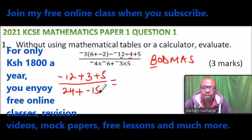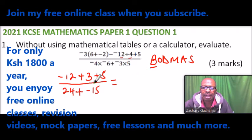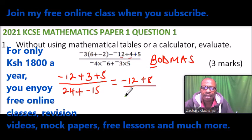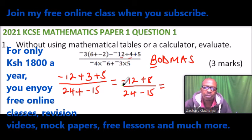Now we do the addition. In the numerator: plus 3 plus 5 is 8, so we have minus 12 plus 8, which gives minus 4. The denominator is 24 minus 15, which gives 9. So the final answer is minus 4 divided by 9.